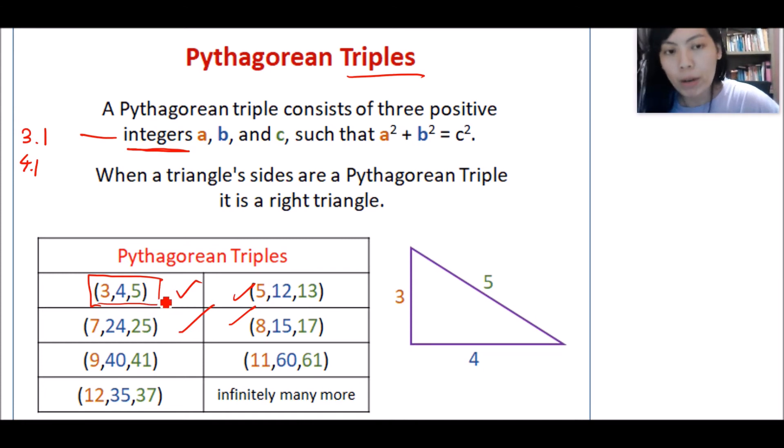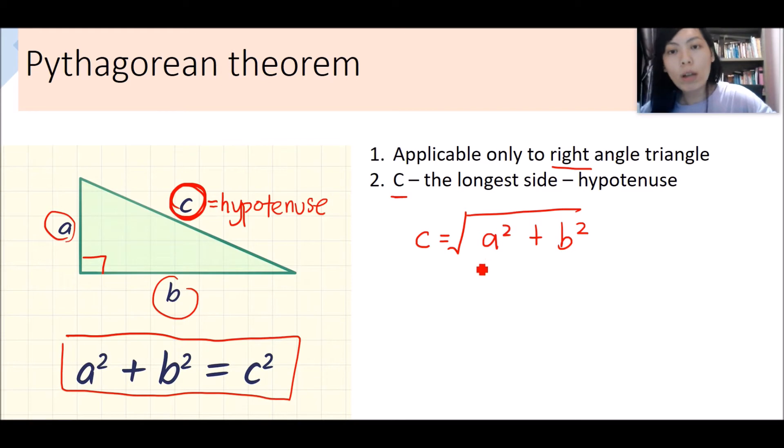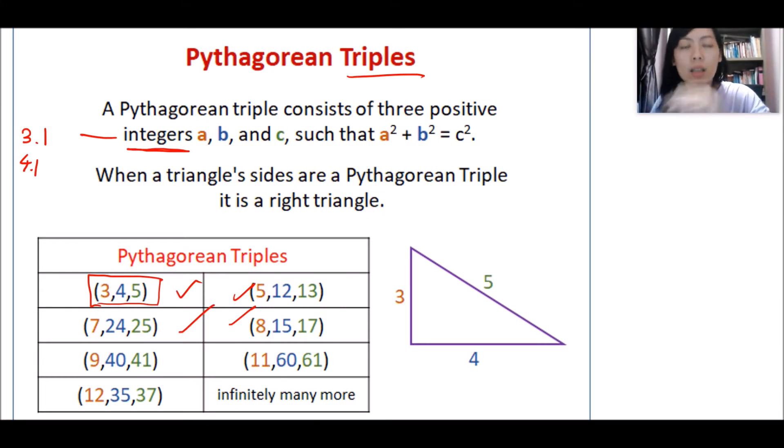Once you have memorized all these Pythagorean triples, you will manage to solve problems regarding Pythagorean theorem very fast. Let me repeat again. This is one of the ways to find the length of any side in a right-angled triangle. If it fulfills any of these Pythagorean triples, you will manage to find out the length of each side very quickly.